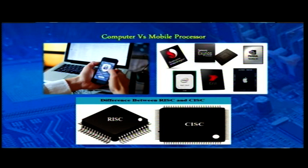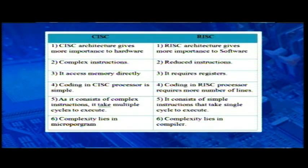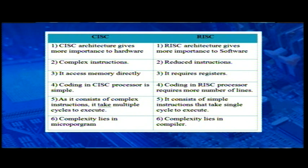Instruction set computing is classified into two types: CISC (Complex Instruction Set Computing) and RISC (Reduced Instruction Set Computing). CISC uses complex instruction sets suited for normal computers. RISC is compatible with ARM architecture and is used in mobile devices. In RISC the complexity lies in the compiler, while in CISC the complexity lies in the microprogram. RISC requires more lines of code but communicates after every operation, making it well-suited for mobile environments.